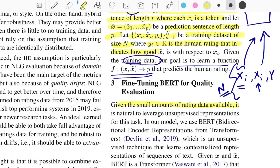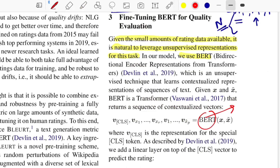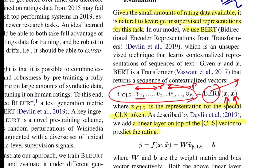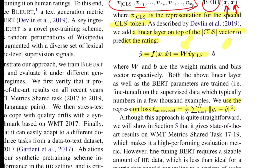Given the small amounts of rating data available, it is natural to leverage unsupervised representations, so they use BERT. BERT is an encoder representation of transformer units — it takes in two texts (the original and the system-generated one) and outputs a sequence of word embeddings. Each V_X_i is the vector representation of the i-th word, and V_CLS is the vector representation of the special CLS token, which is a pooled representation of all word embeddings. They add a linear layer over the CLS vector with learnable weights and biases, and use mean squared error loss because the human-assigned label is a floating value indicating similarity.